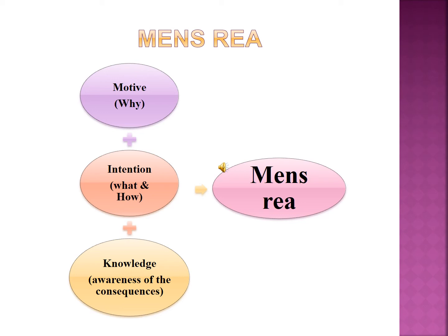The element or degree of mens rea forms the basis for determining the nature of crime and consequently the basis for deciding the quantum of punishment. For example, it is only after establishing mens rea that we can differentiate between culpable homicide under Section 299 and murder under Section 300 of IPC, which is one of the most significant topics of IPC. The appropriate understanding of mens rea further helps in interpreting the interconnectedness of many other important sections dealing with elements of crime.